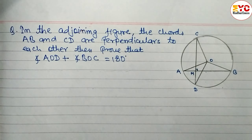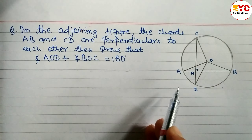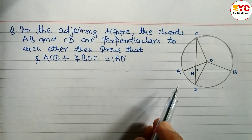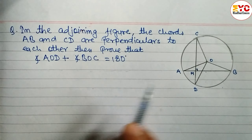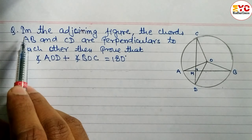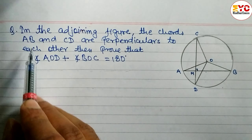In this video we will learn how to solve an unseen theorem, which is repeated maximum times in SEE and SE2. We have a question: in the adjoining figure, the chords AB and CD...